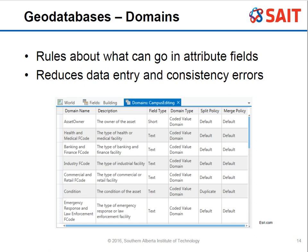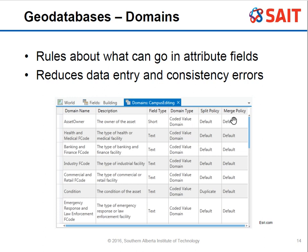Now we're going to talk about domains, which are really powerful and really fun because they allow us to limit error and control what goes into the attributes — they set the rules, and you get to set them. This also allows for a reduction in consistency errors. You can see here that a domain has a description, you can set what kind of field it's going to be, certain codes that are allowed, and there's something called split and merge policies.